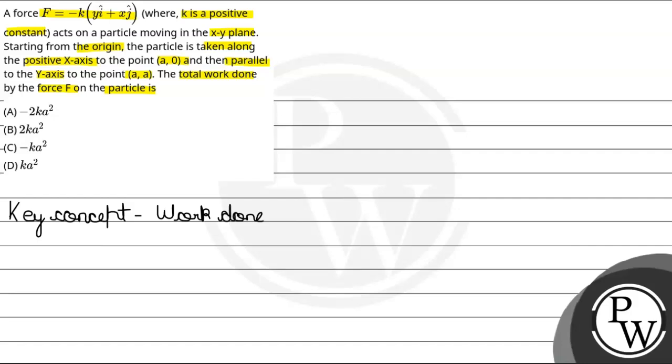Hamein question mein kaha raha hai, hum graph draw kar lete hai. Hamare ko bola hai ki particle origin se start hota hai and then wo along the positive x axis aata hai to a point (a, 0). Aur uske baad wo jata hai y axis ke parallel to point (a, a).